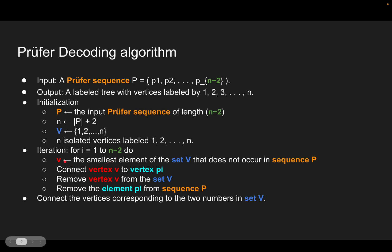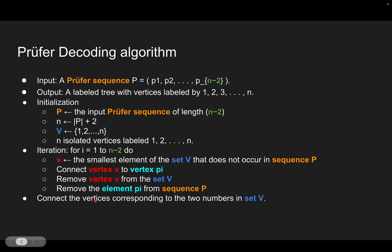We iterate n minus 2 times the following actions: we find the smallest element that exists in set V but does not occur in sequence P, then we connect that smallest vertex with the current vertex pi. We remove the smallest element from V and remove pi from P. After n minus 2 iterations, there will be two remaining vertices, which we connect, and the algorithm outputs the final labeled tree.